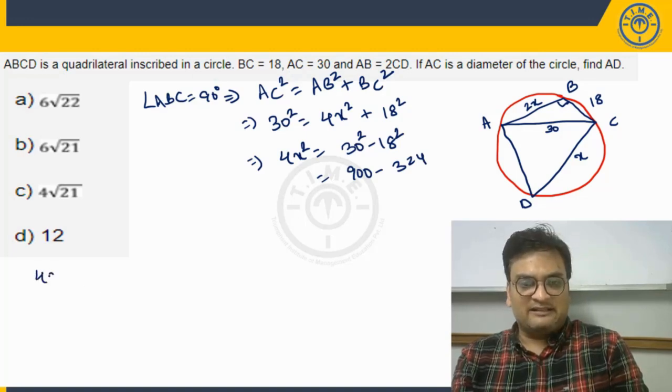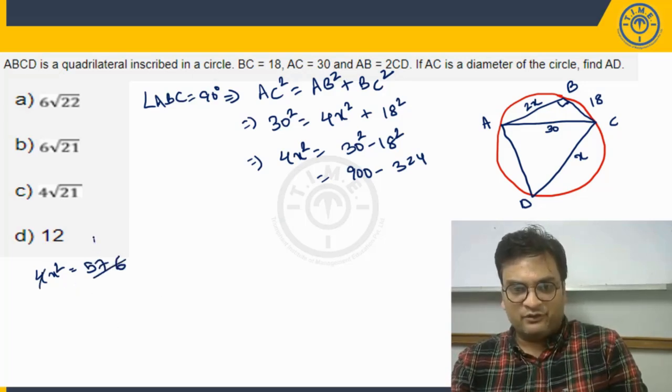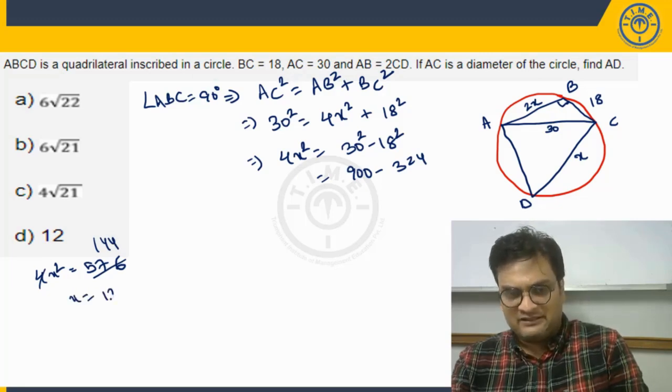So I write it here, 4x square will be equal to 576. So when you solve this, 4 will go 144 times and x will turn out to be root 144 which is 12.